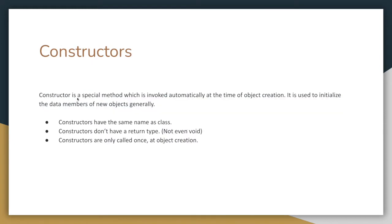Constructors are special methods that are called automatically at the time of object creation. When we create an object like 'new Student()' or 'new Person()', the constructor is called automatically. Constructors have the same name as the class and do not have a return type — not even void. Constructors are only called at the time of object creation.